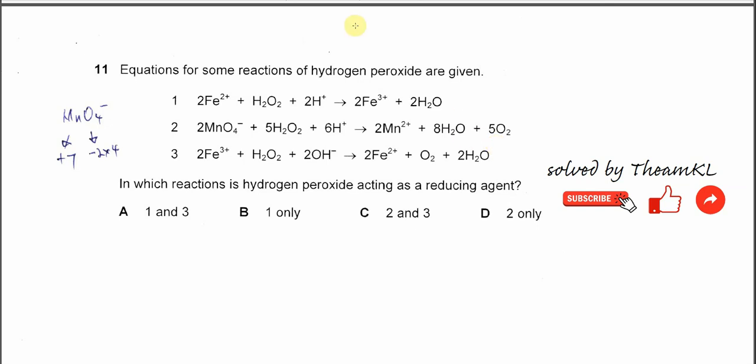Question 11. Equations for some reactions of hydrogen peroxide are given. There are three reactions here. In which reactions is hydrogen peroxide acting as a reducing agent?